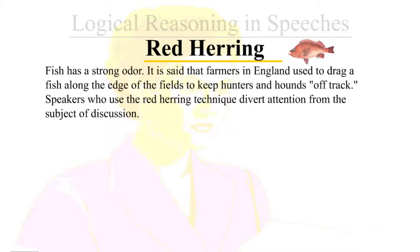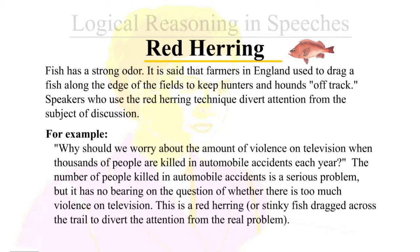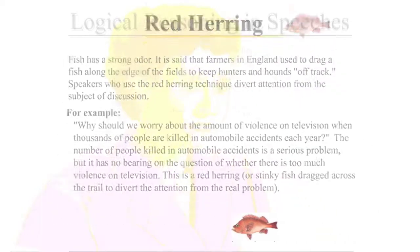Red herring: fish has a strong odor. It is said that farmers in England used to drag a fish along the edge of fields to keep hunters and hounds off track. Speakers who use the red herring technique divert attention from the subject of discussion. For example, 'Why should we worry about the amount of violence on television when thousands of people are killed in automobile accidents each year?' The number of people killed in automobile accidents is a serious problem, but it has no bearing on the question of whether there is too much violence on television. This is a red herring — a stinky fish dragged across the trail to divert attention from the real problem.